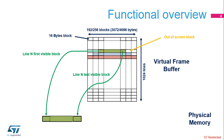Each line is composed of 192 or 256 16-byte blocks. In this example, out-of-screen blocks, shown here in white, won't be mapped into the physical memory. For each line, the first visible block and the last visible block are stored in the lookup table.